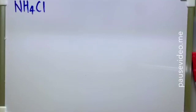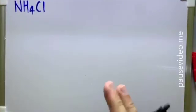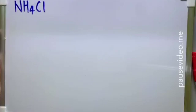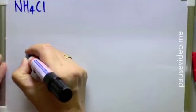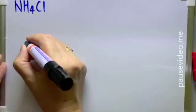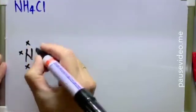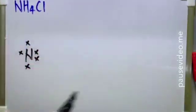So before we can start that, the first thing to do is we are going to draw the Lewis structure of ammonia as well as hydrogen chloride. I will start by drawing the Lewis structure of ammonia, whereby in ammonia we have one nitrogen. Nitrogen is found in group 15, therefore it has five valence electrons.